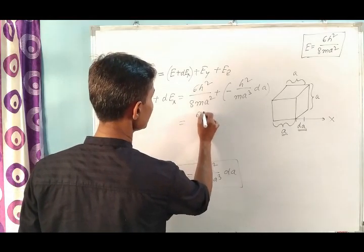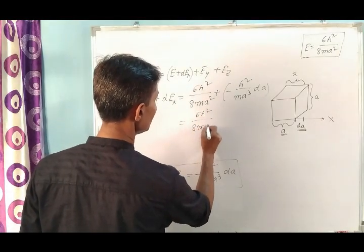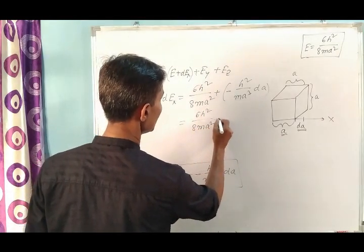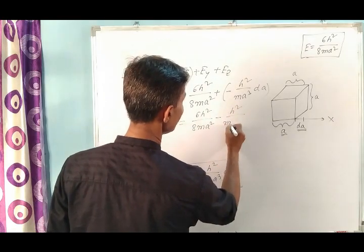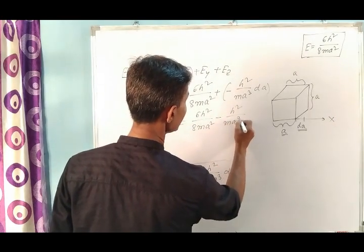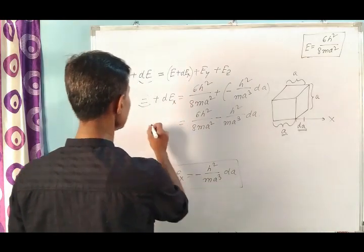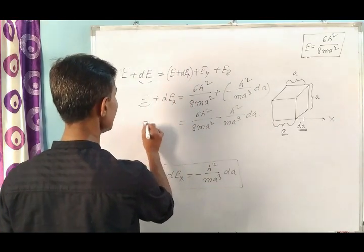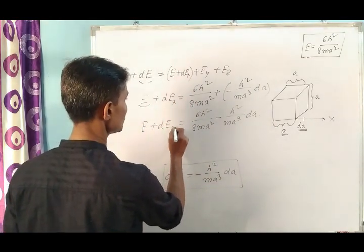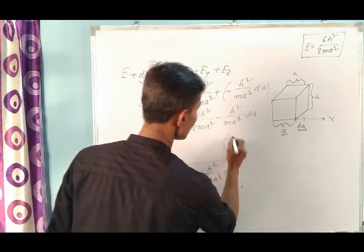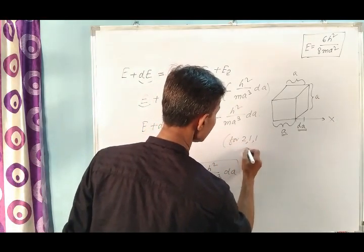Thus we get the energy equation for the (2,1,1) state: E plus dEx equals 6h² divided by 8mA² minus h²A² divided by mA³ times dA. This is the energy equation for the (2,1,1) state.